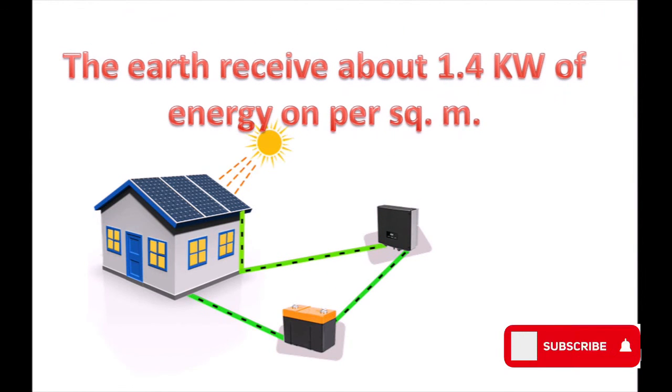The Earth receives about 1.4 kilowatts of energy per square meter. This is the average solar energy received on Earth's surface.